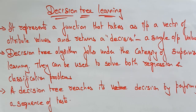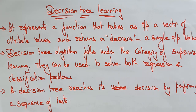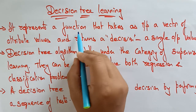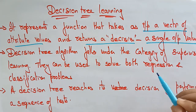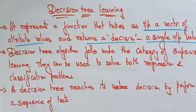Welcome back. Coming to the next topic in artificial intelligence, we are dealing about learning from observations. In the previous video I explained about inductive learning. Now coming to the next topic — decision tree learning. With the help of the decision tree you can learn how it is possible. It represents a function that takes as input a vector of attribute values and returns a decision, that is a single output value.